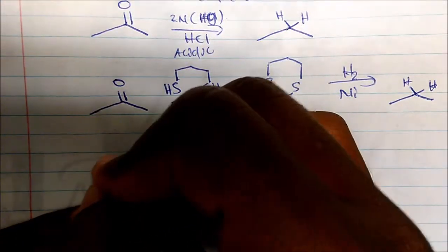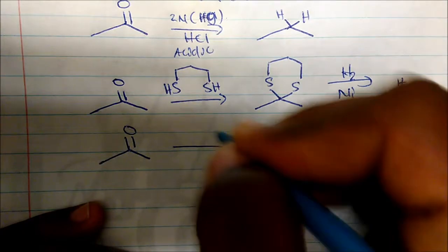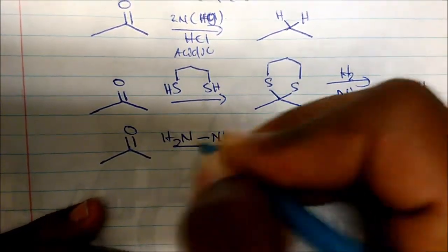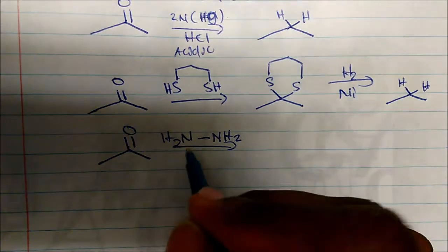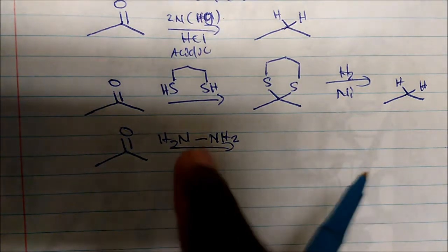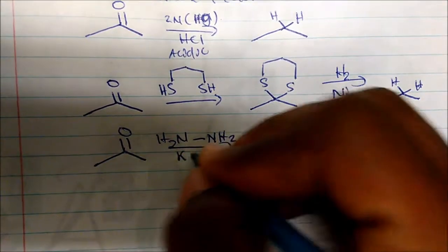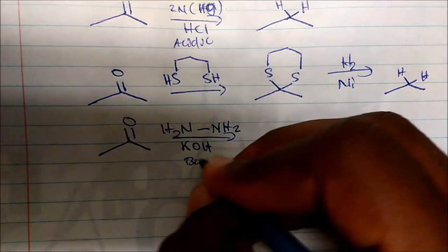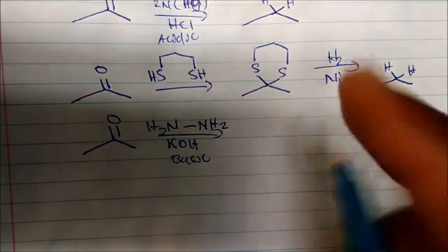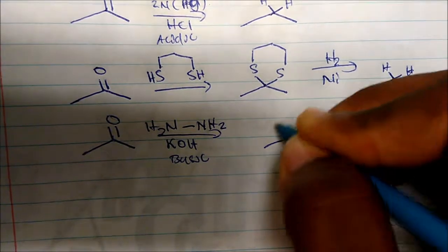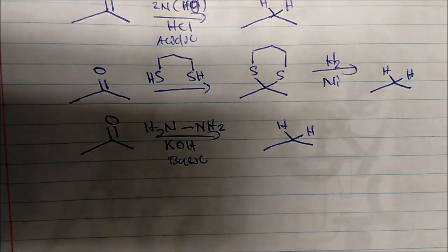In the Wolff-Kishner reaction, I take a ketone and I use hydrazine (N₂H₄) in potassium hydroxide. This is under basic conditions, and what this does is give me my alkane.